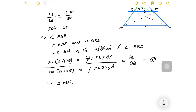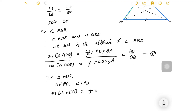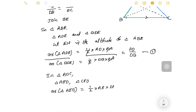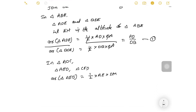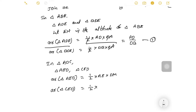Next, we consider two more triangles: triangle AED and triangle CED. Let DM be the altitude of both triangles. The area of triangle AED equals half into base AE into height DM, and the area of triangle CED equals half into base CE into height DM.